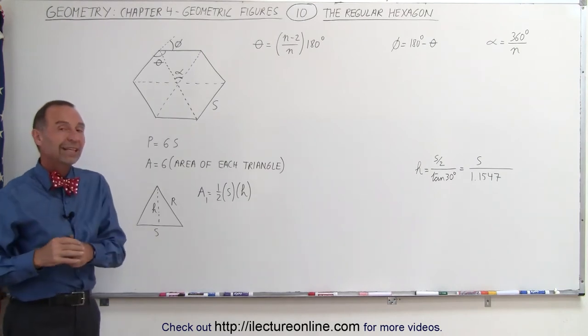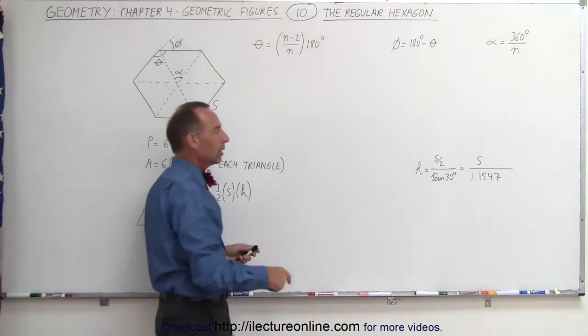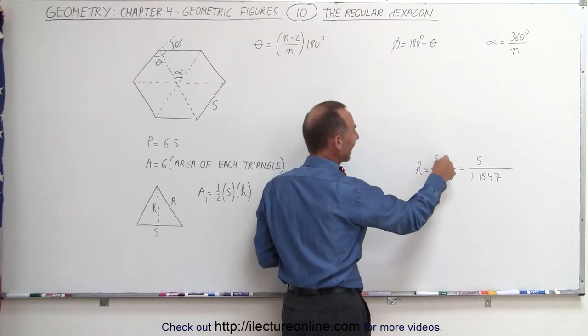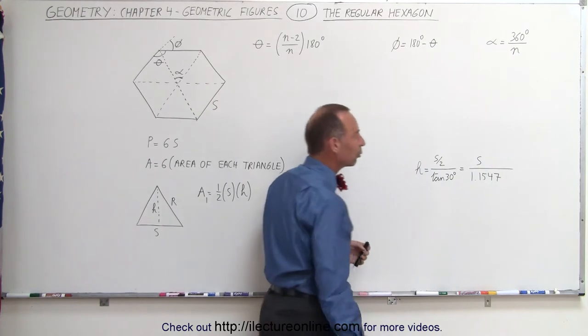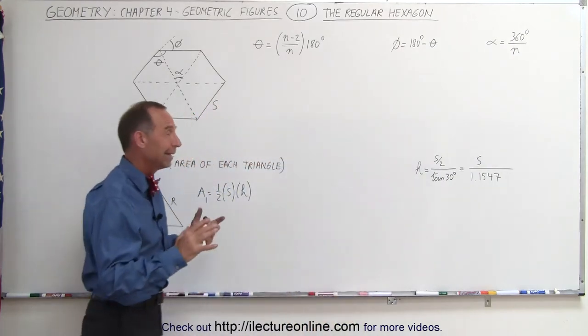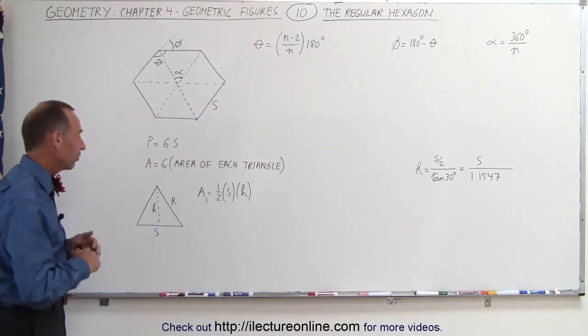And that's what you'll see later in the next video, that the relationship can be found by taking s divided by 2, divided by the tangent of 30 degrees, and it'll be s divided by 1.1547, accurate to four decimal places.